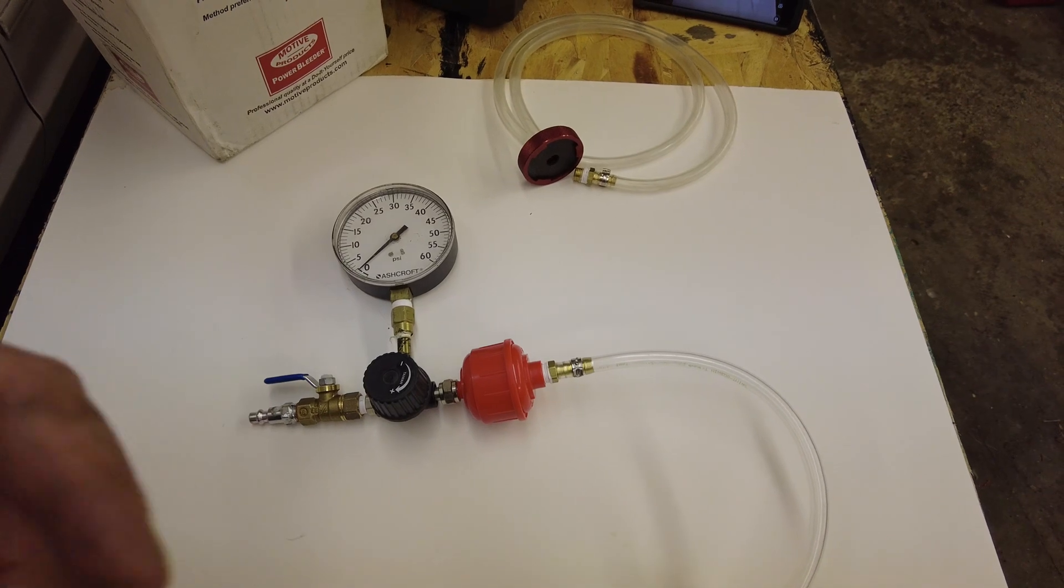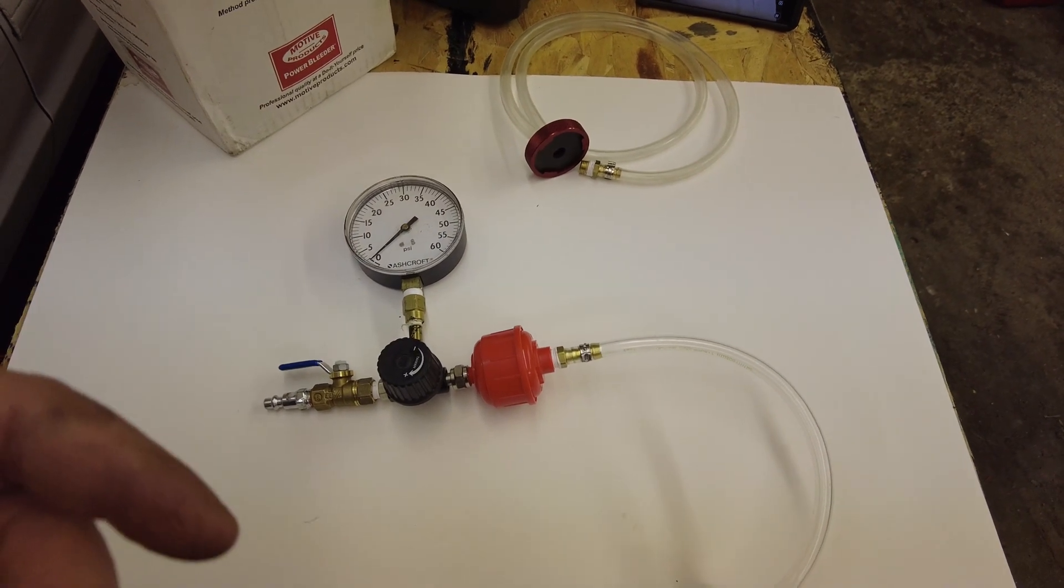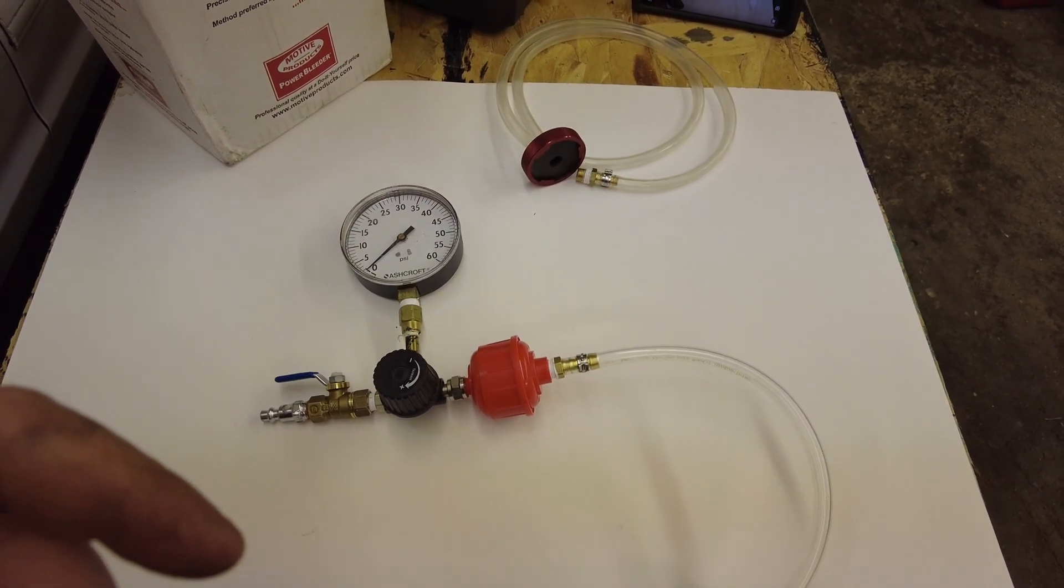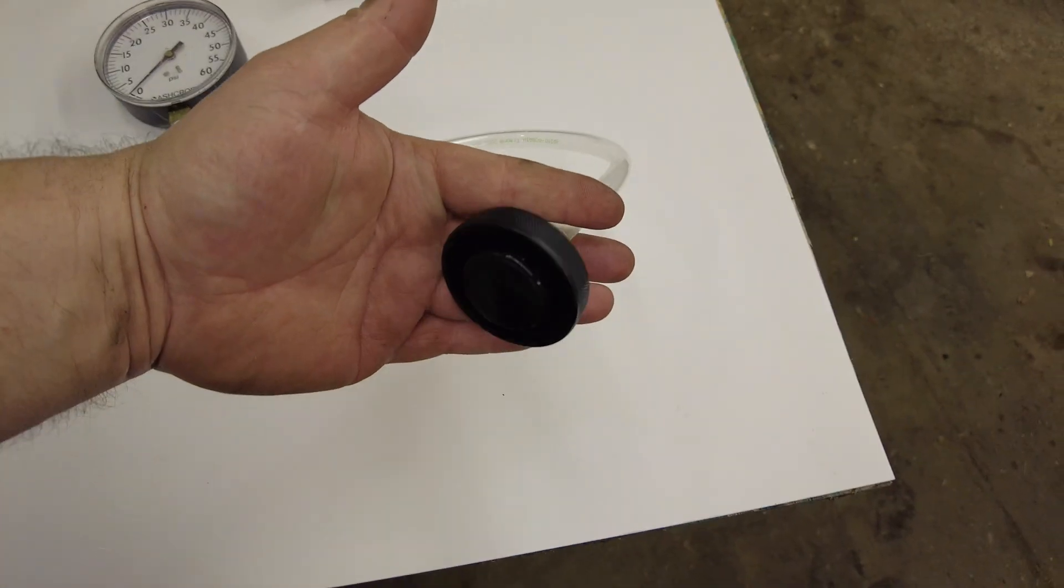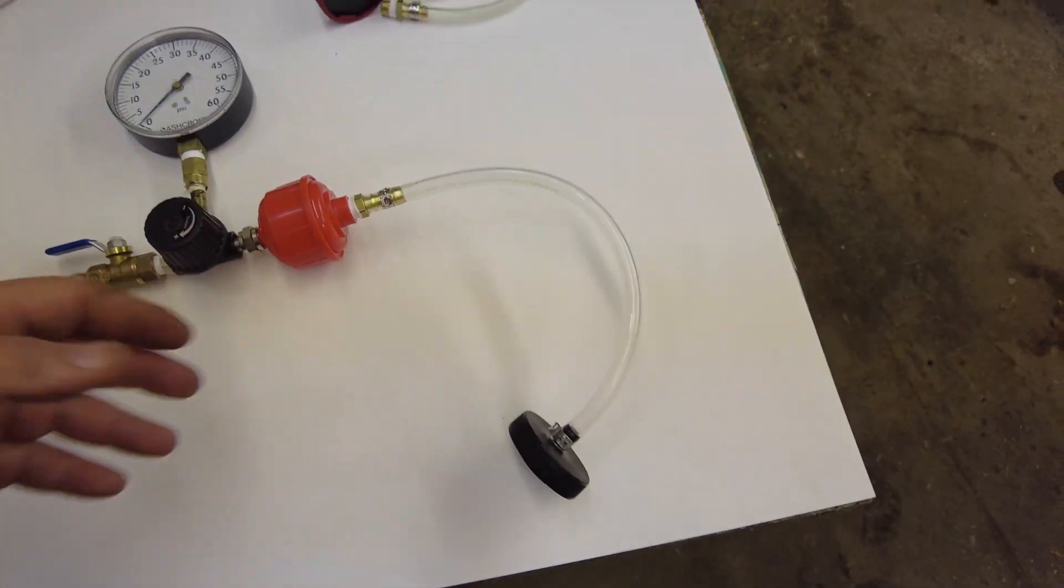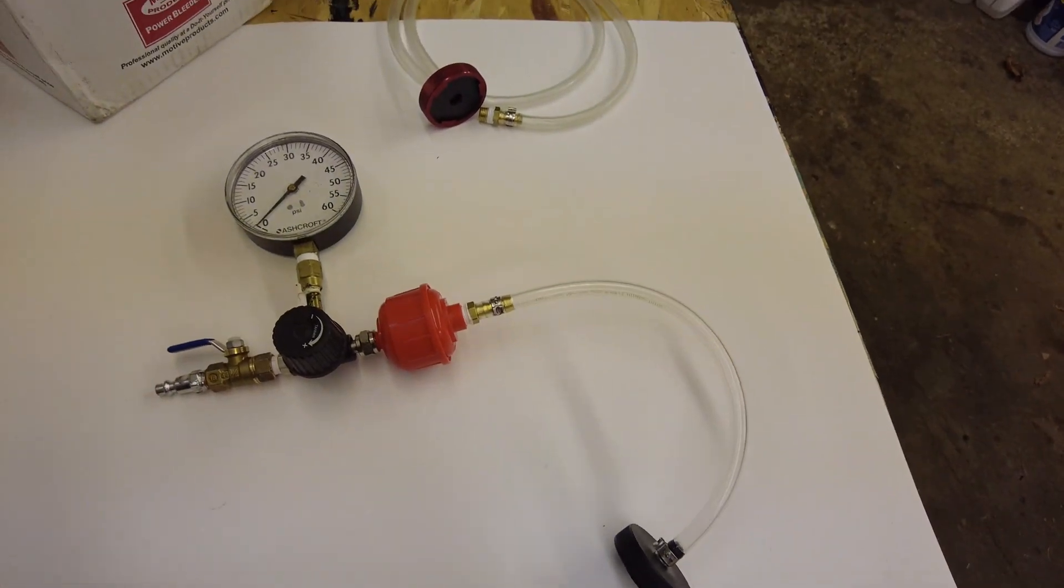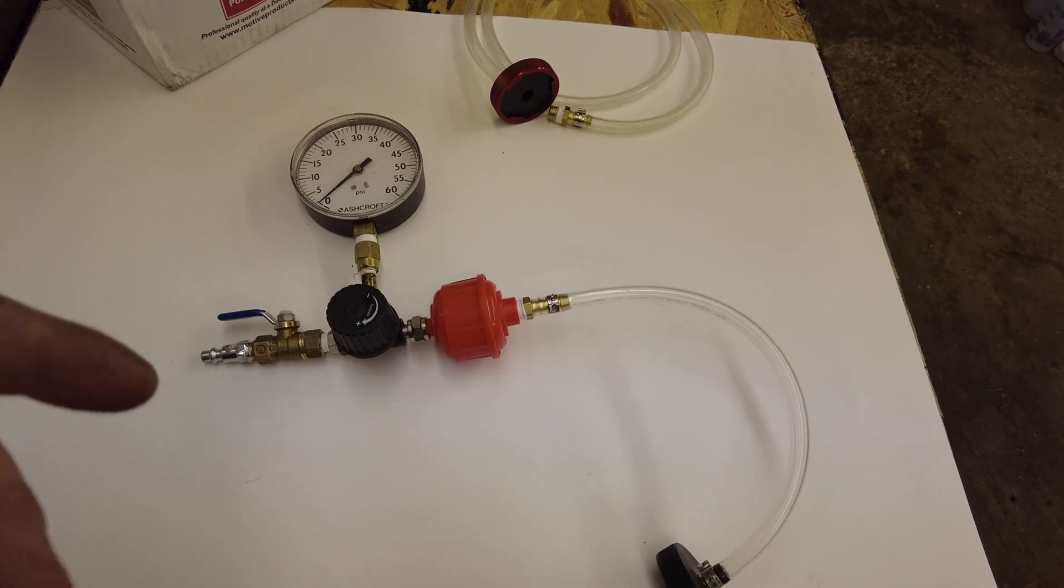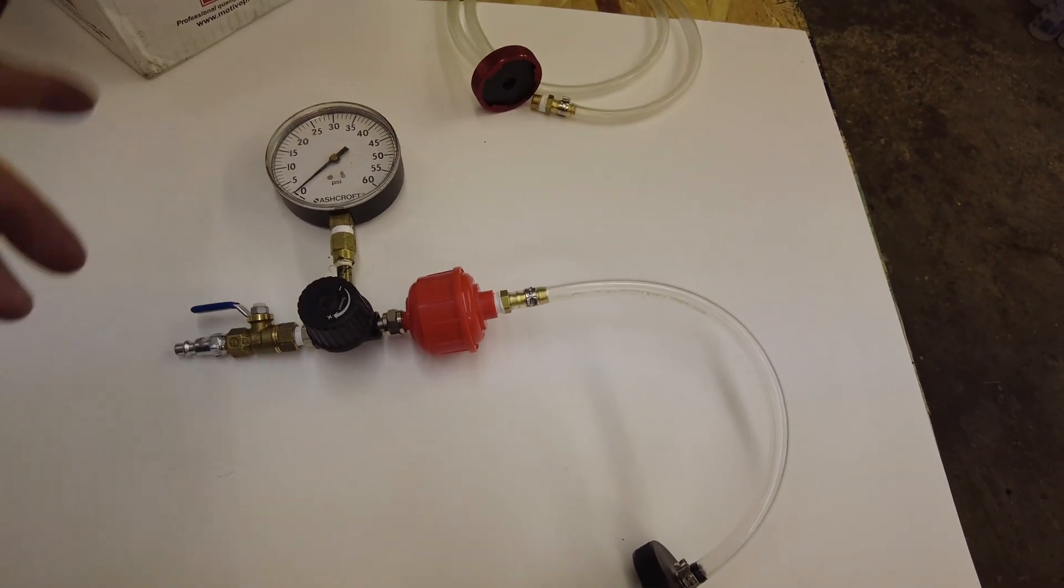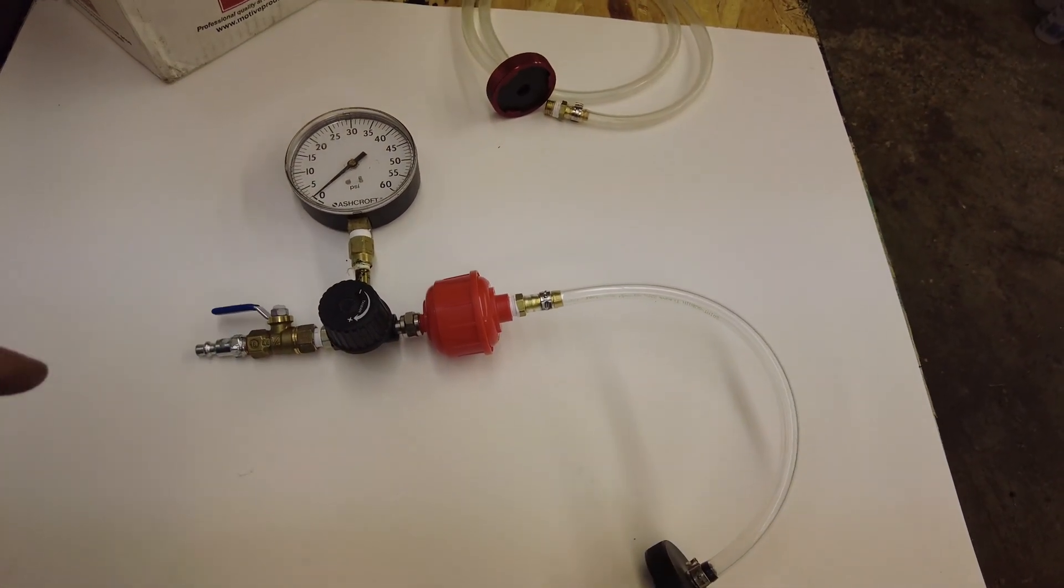Well I did that two or three times, and by the time this piece showed up - because I had to order on Amazon and of course it came a day late - by the time that showed up, after I did the automated bleed process with the scan tool three times, once I put this on and bled the brakes by power bleeding, I still had bubbles coming out of all four calipers.